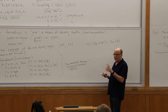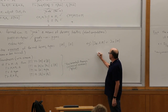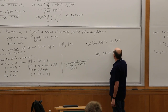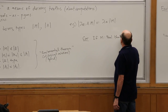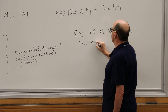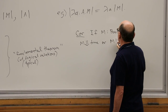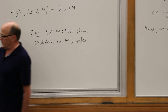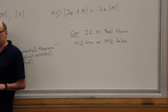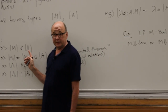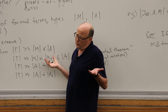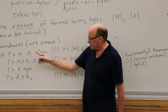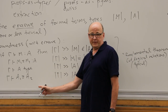A corollary of the soundness theorem is that if you have a closed term of type Boolean, then it evaluates to true or it evaluates to false. Why? The various lemmas I proved about the computational meaning of types were exactly the ones I needed to prove this theorem. In the notes I gave you, they're all in there — those were the lemmas I chose.